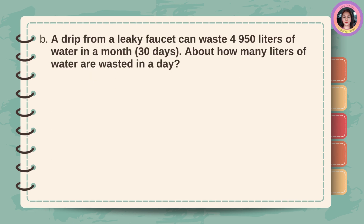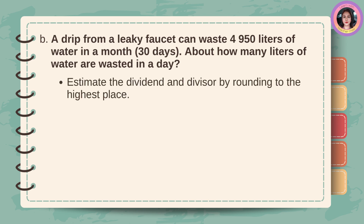A drip from a leaky faucet can waste 4,950 liters of water in a month or 30 days. About how many liters of water are wasted in a day? Estimate the dividend and divisor by rounding to the highest place.